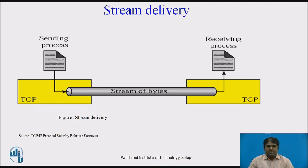TCP creates an environment in which the two processes look as if they are connected by an imaginary tube that carries their bytes across the internet. The sending process produces the stream of bytes and the receiving process consumes it — meaning the sending process writes to the tube and the receiving process reads from it.